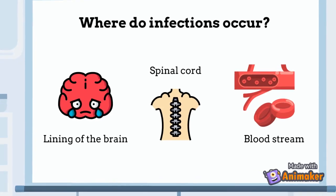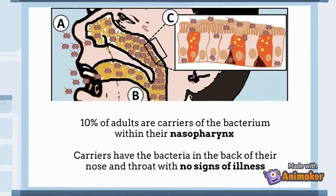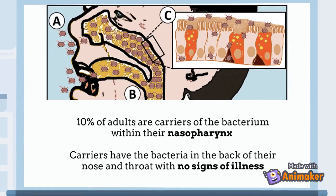The bacteria can cause infections in the linings of the brain, spinal cord, and the bloodstream. Approximately 10% of adults are carriers of the bacterium within their nasopharynx, and carriers have the bacteria in the back of their nose and throat, yet they show no signs of illness.